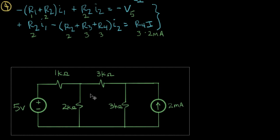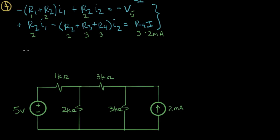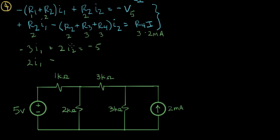Let me move the circuit and write out the equations with the real values. The first equation becomes: minus three I1 plus two I2 equals minus five. Since all resistors are in kilohms, we can scale down by a factor of a thousand and use simple numbers without the Ks. The second equation is: two I1 minus eight I2 equals plus six — because two plus three plus three equals eight for the I2 coefficient, and three kilohms times two milliamps equals plus six.